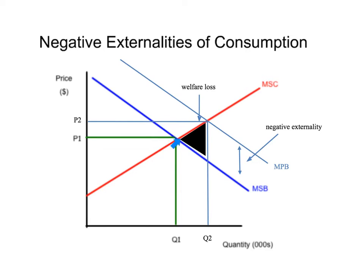So the government is going to have to get involved to try to eliminate this welfare loss, which is created as a result of the negative externality — because the marginal private benefit curve has moved upward along the marginal social cost curve and created a welfare loss. Let's look at how the government could get involved to eliminate, or as much as possible, the negative externality of consumption.